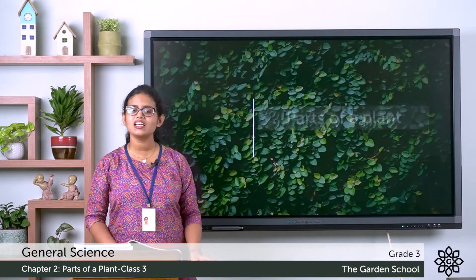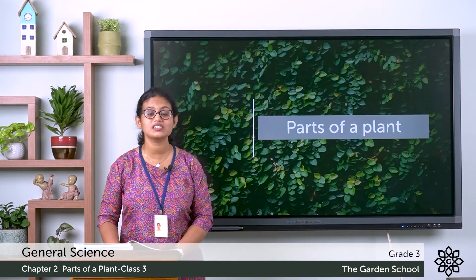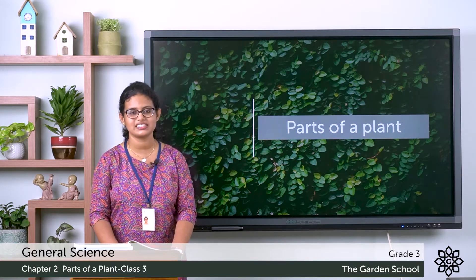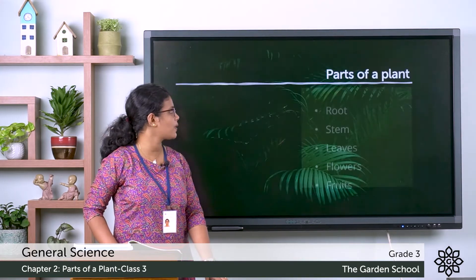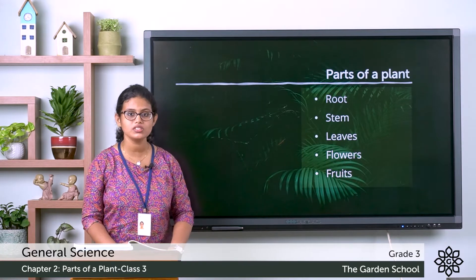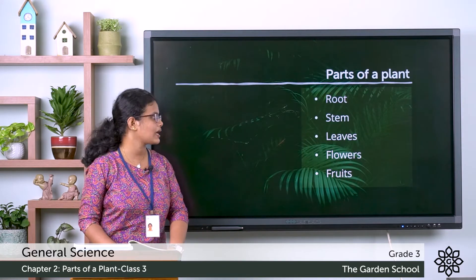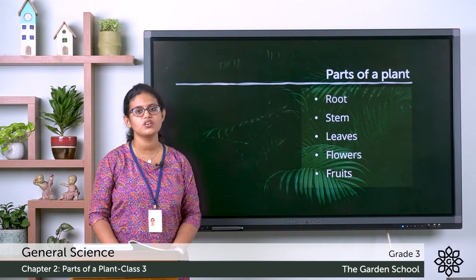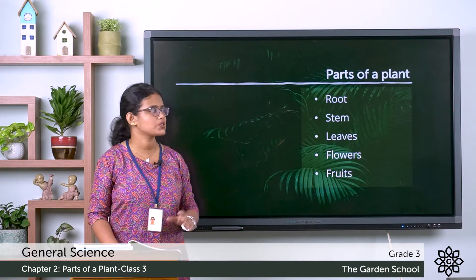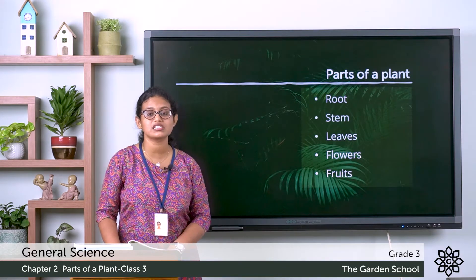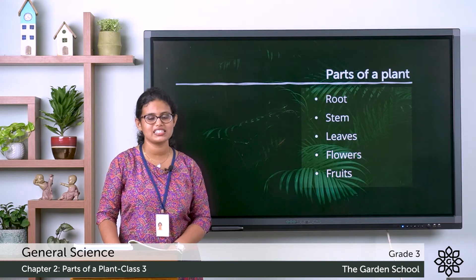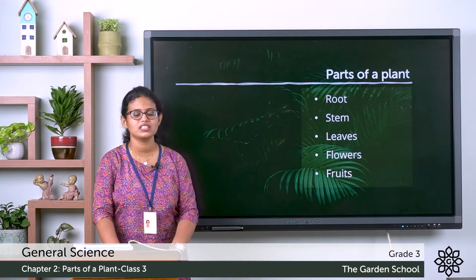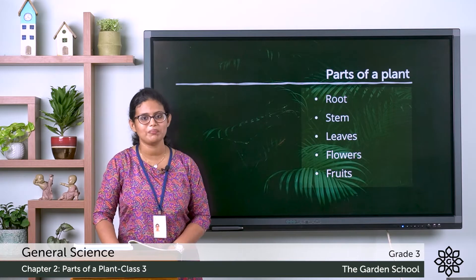In the last few classes we discussed about the different parts of a plant. So which are the different parts of a plant? Root, stem, leaves, flowers and fruits. And we discussed about root, stem and leaves. So today let's discuss about the other parts of a plant.